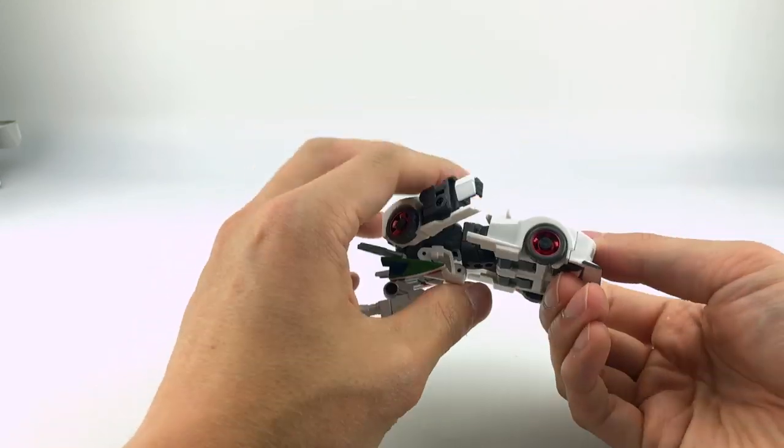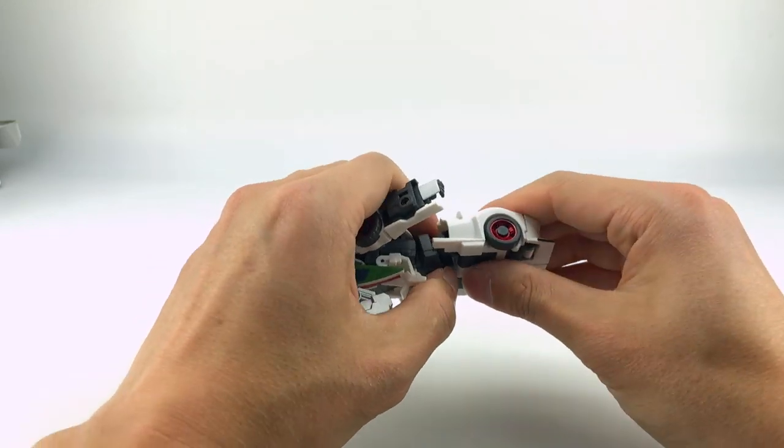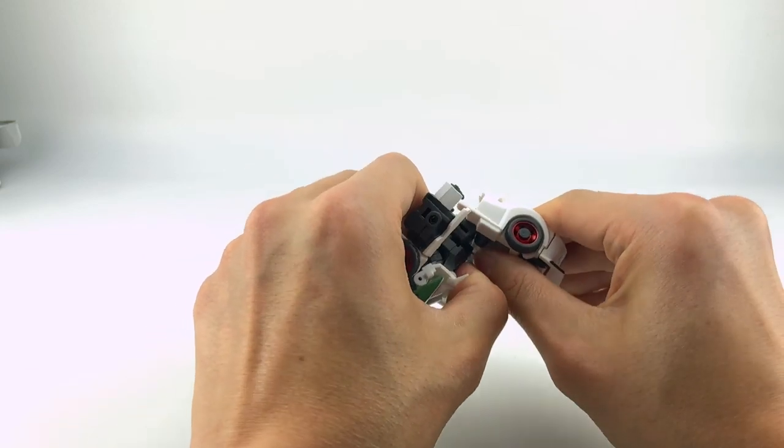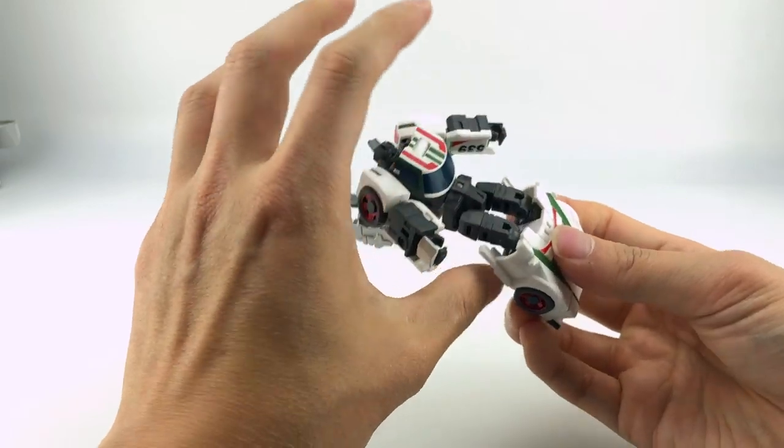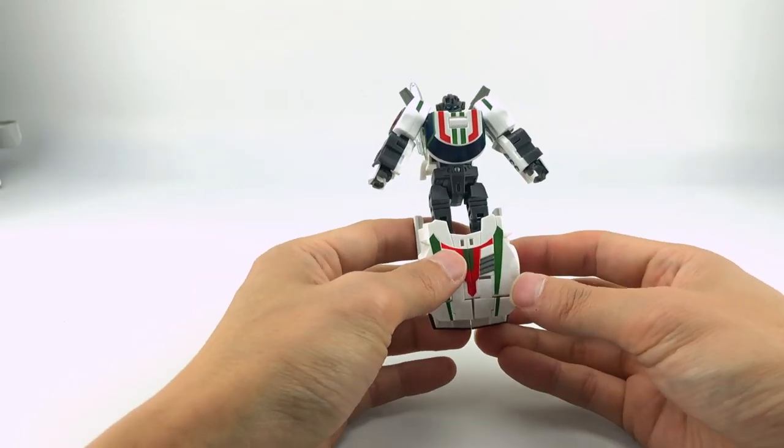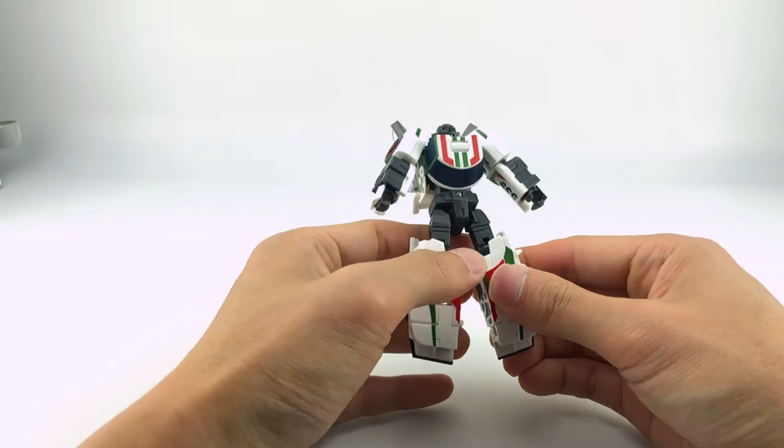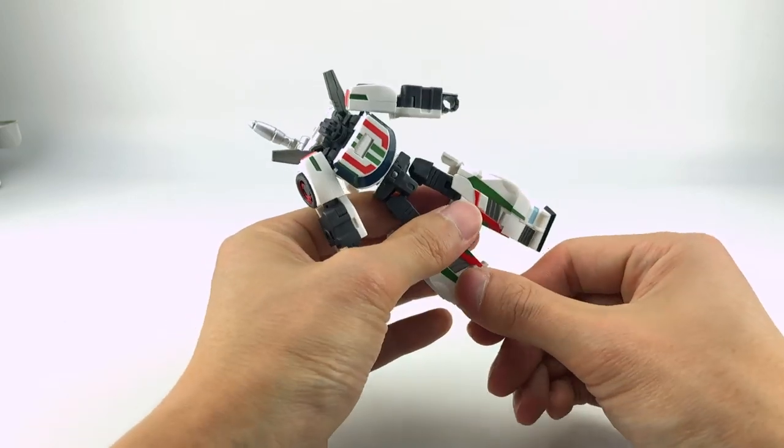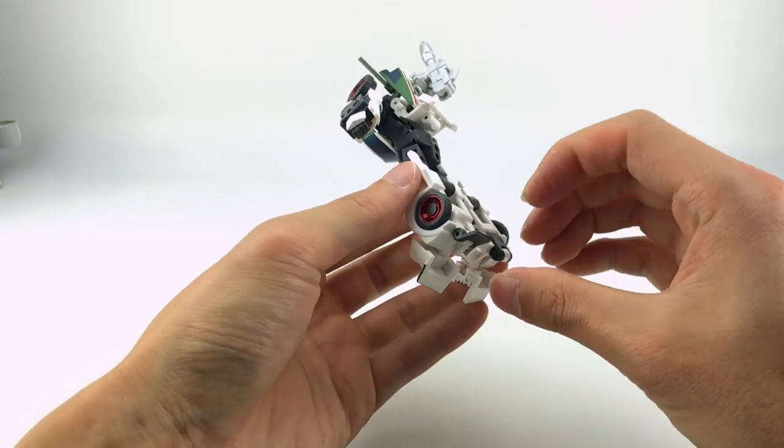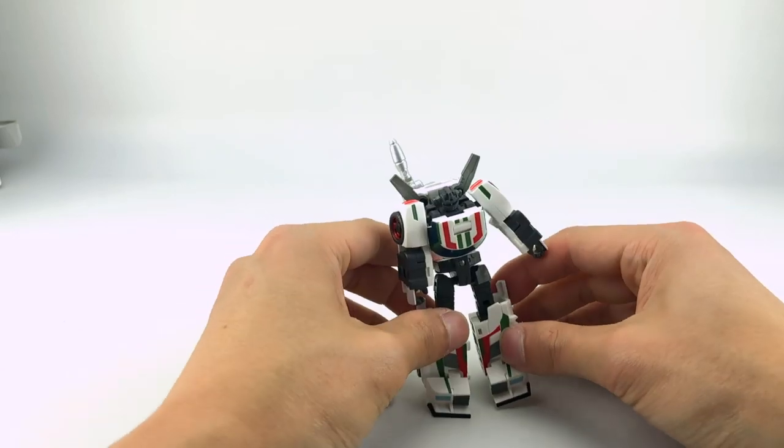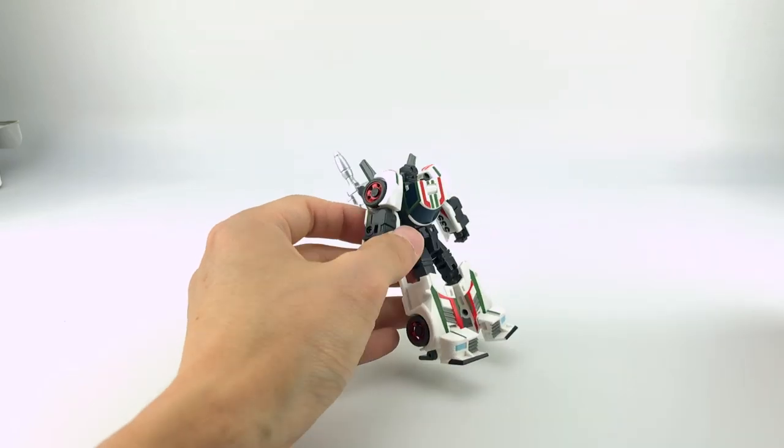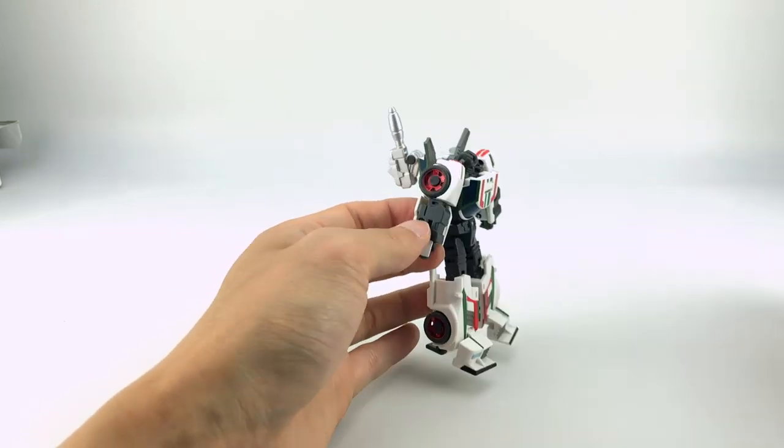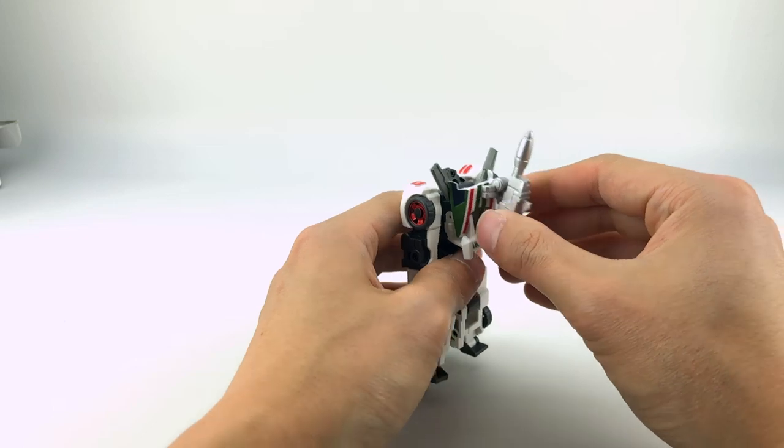The legs will, again, I find it easiest just to kind of rotate down at the knees like so, and then extend them. You'll feel kind of a friction joint that kind of locks them into place. Separate them. Fold the toes up. Fold the heels out. There we have Hex Wrench back in robot mode. Again, make use of these guns and the shoulder piece of the shoulder cannon as you'd like.